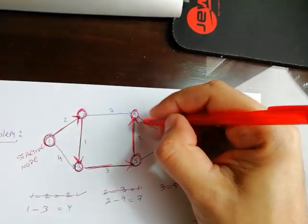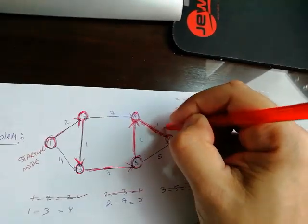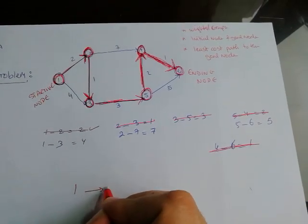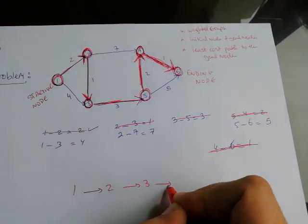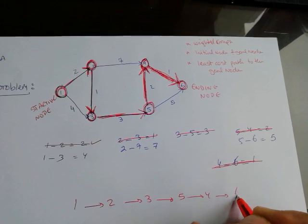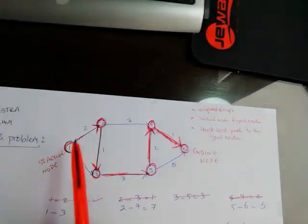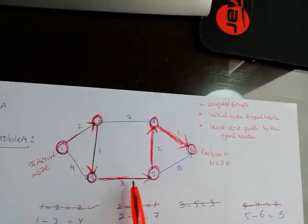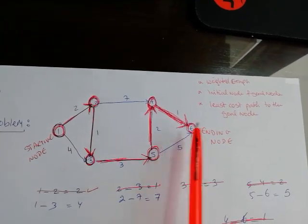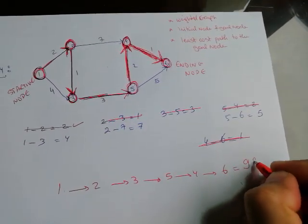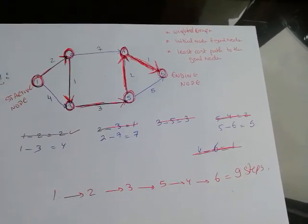So the shortest path problem solution is one to two, to three, to five, to four, and to six, for a total of nine steps.